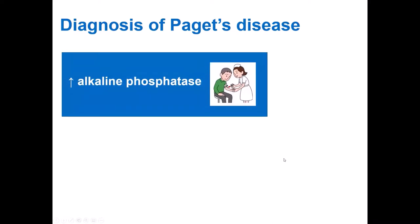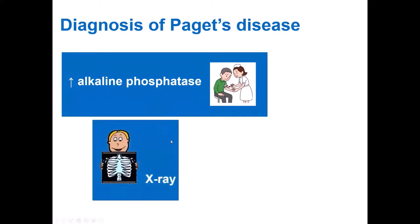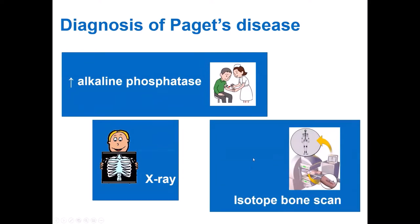Now we'll quickly move on to the diagnosis of Paget's disease. Isolated elevation of alkaline phosphatase, an enzyme produced by osteoblasts, can be easily detected in a blood test and can indicate active Paget's disease. An x-ray can also detect Paget's bones, and an isotope bone scan, as already mentioned, will tell us about the activity of the disease. In clinical practice, all three tests are usually performed to diagnose and assess the activity and extent of Paget's disease.